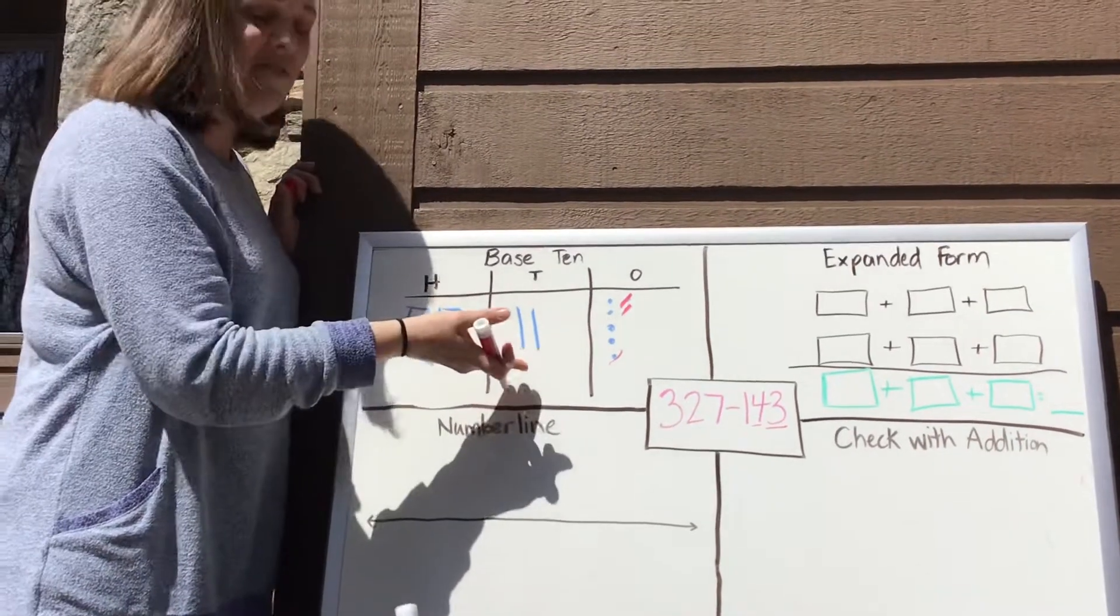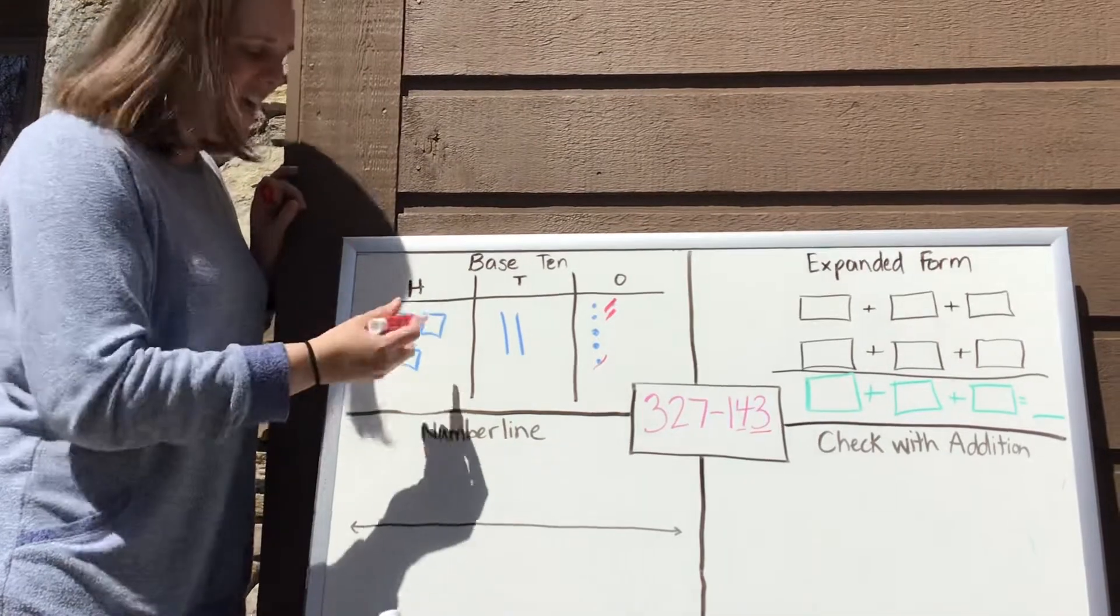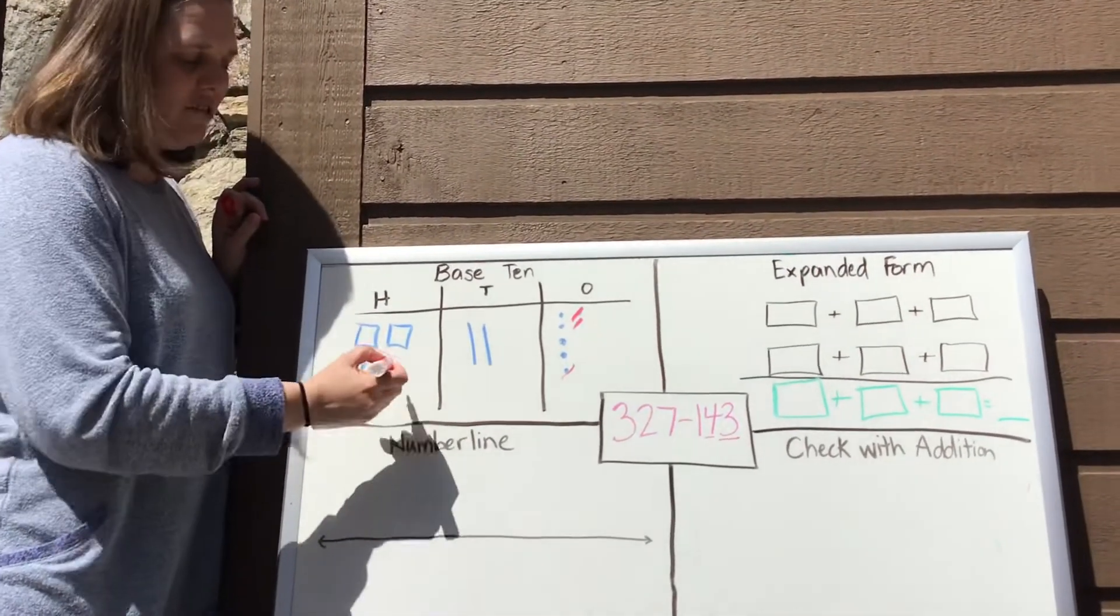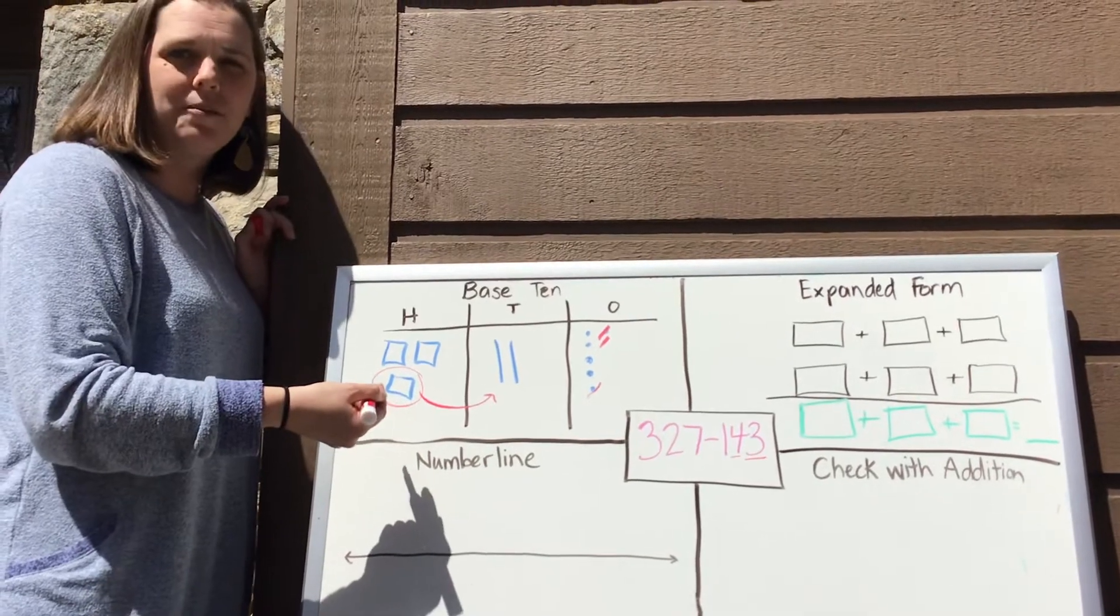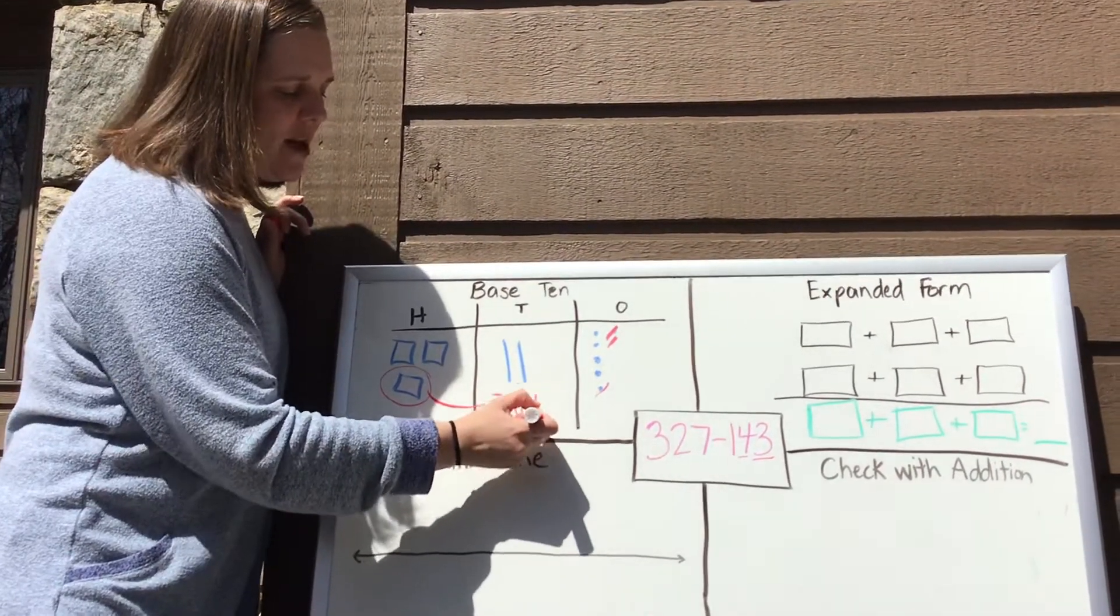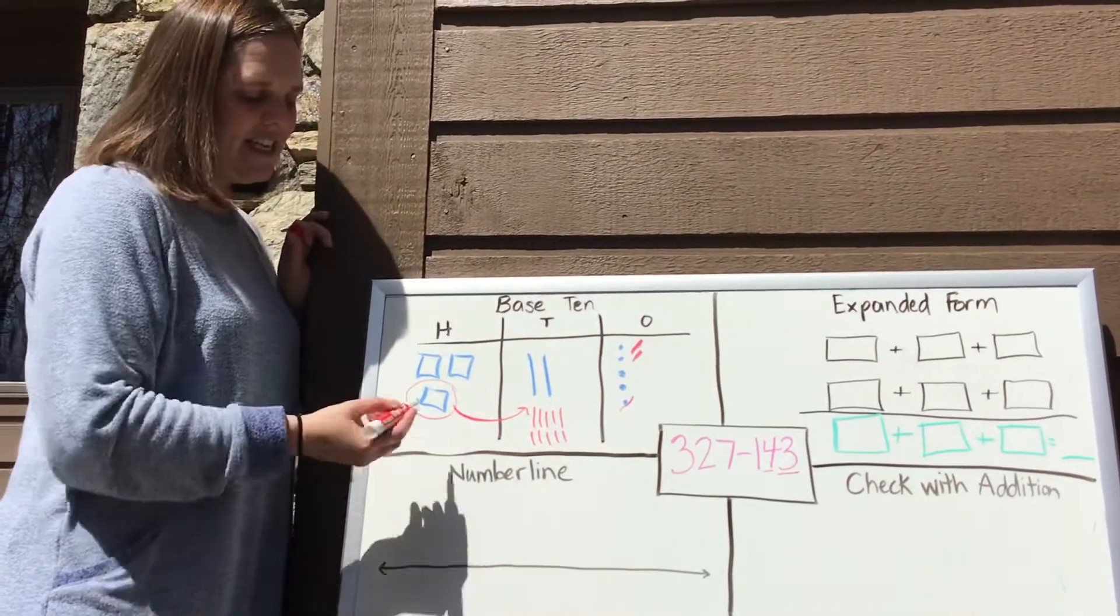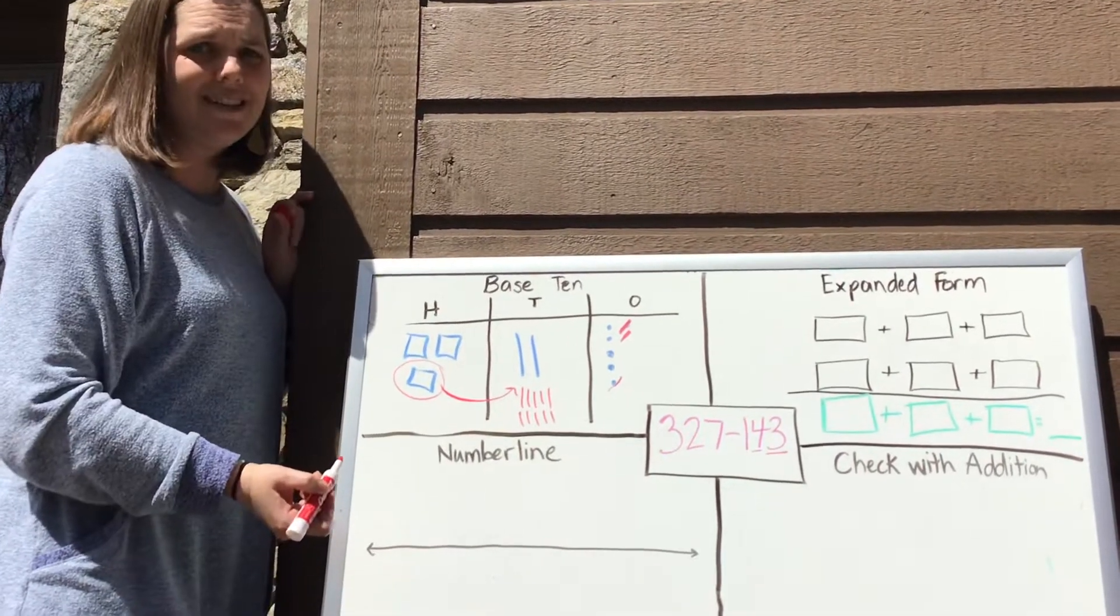Uh-oh, I don't have four tens, so what do I need to do? That's right, I need to regroup one of these hundreds into some tens. How many tens make up a 100? That's right, ten tens make one 100. So there's my ten tens. So all I've done is take this 100 and regroup it into ten tens.